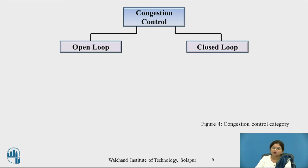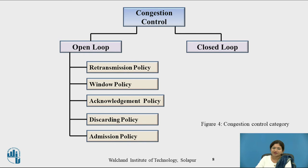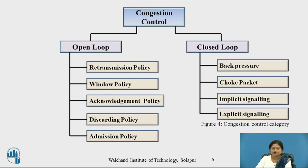Let us see the open loop policies and closed loop protocols. There are five open loop congestion control policies: retransmission policy, window policy, acknowledgement policy, discard policy, and admission policy. For closed loop congestion control, the back pressure protocol is used, along with choke packet, implicit signaling, and explicit signaling.